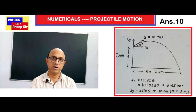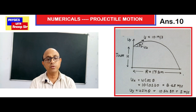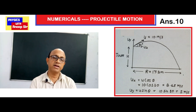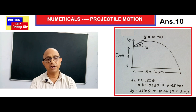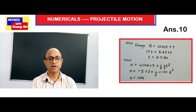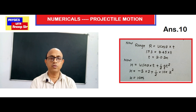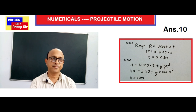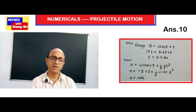First calculate horizontal component: u_x = u cos30° = 10 cos30° = 8.65 meter per second. Then vertical component: u_y = u sin30° = 10 × sin30° = 5 meter per second. Using range = u cosθ × t, we put R = 17.3 = 8.65 × t, giving time t = 2 seconds.